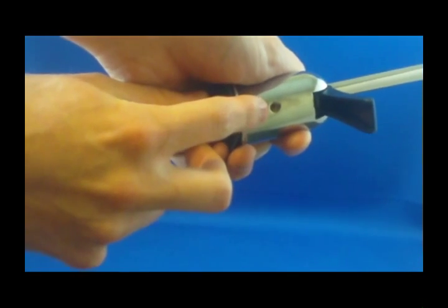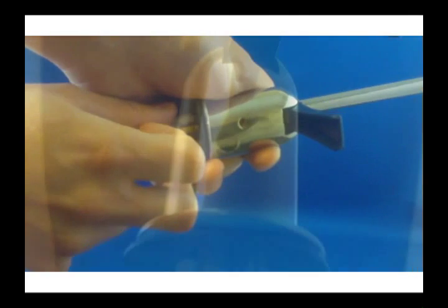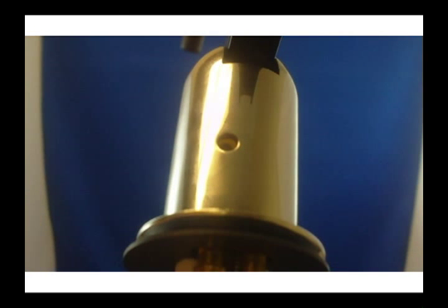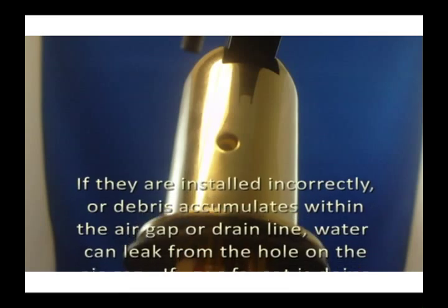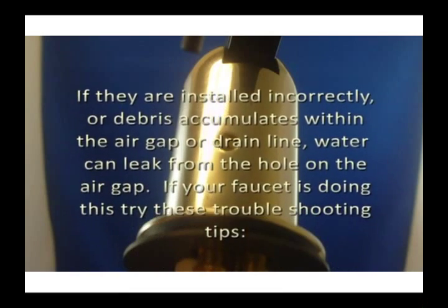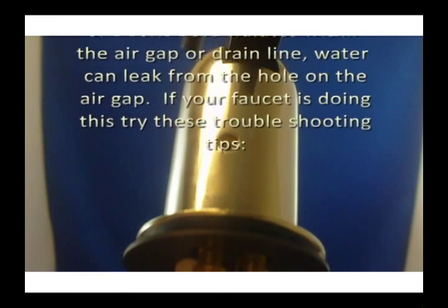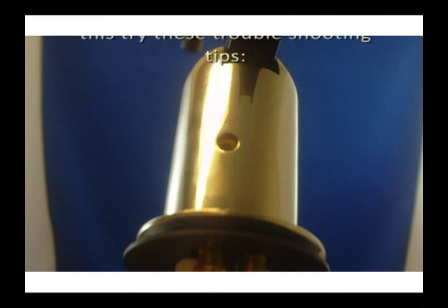When properly installed and maintained, air gap faucets will provide years of trouble-free operation. If they are installed incorrectly or if debris accumulates within the air gap or drain line, water can leak from the hole on the air gap. If your faucet is doing this, try these troubleshooting tips.